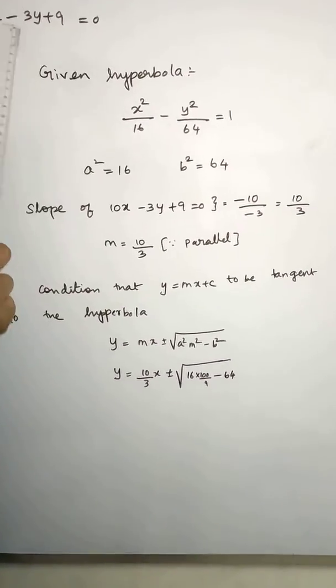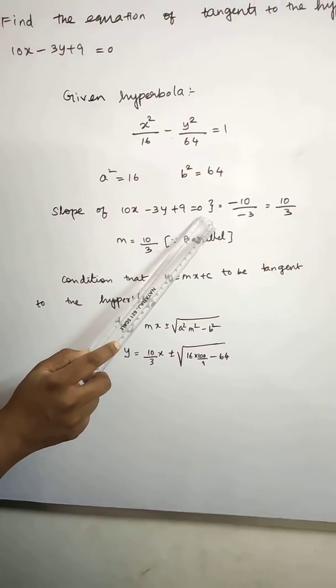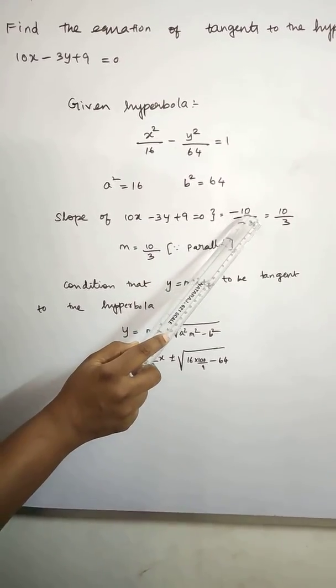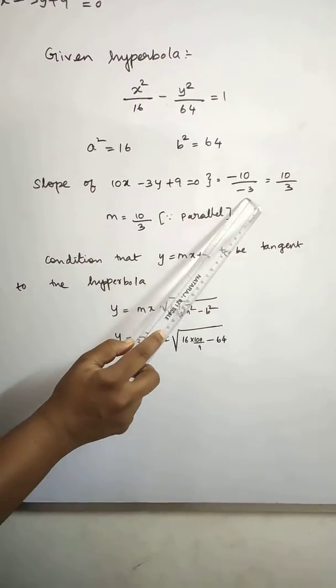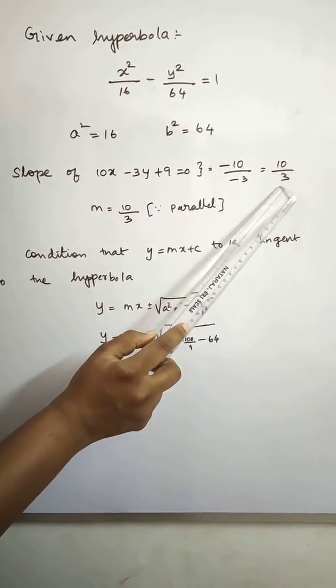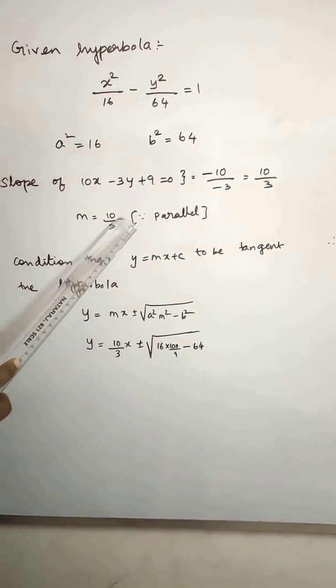Slope of the line 10x minus 3y plus 9 equal to 0. So minus x coefficient by y coefficient. Minus 10 by minus 3. Therefore m is equal to 10 by 3.